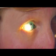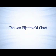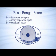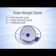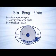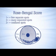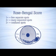The Van Bijsterveld chart asks the observer to grade from 0 to 3 for each exposed zone using a pro forma drawing as a guide to the grades. Grade 0 is no stain. Grade 1 is a few separated spots. Grade 2 is many separated spots. Grade 3 is confluent spots. The maximum score is 9.